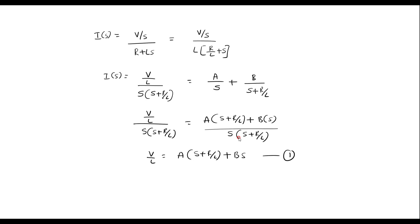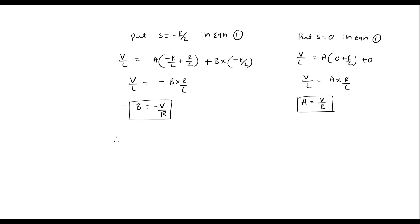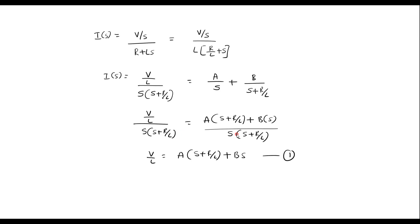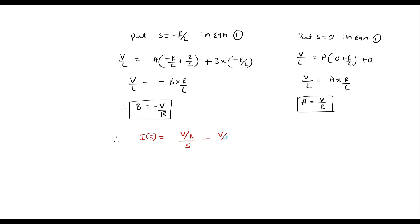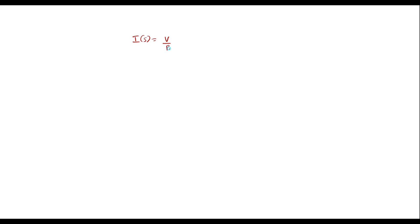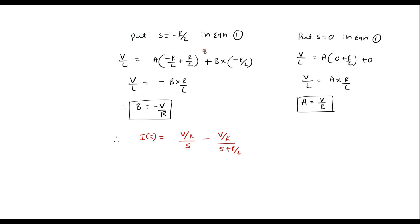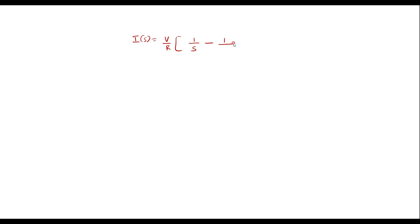Now I can write I of S. A is V by R divided by S, plus B which is minus V by R divided by S plus R by L. Taking V by R as a common constant outside, I of S is equal to V by R times the quantity 1 over S minus 1 over the quantity S plus R by L.